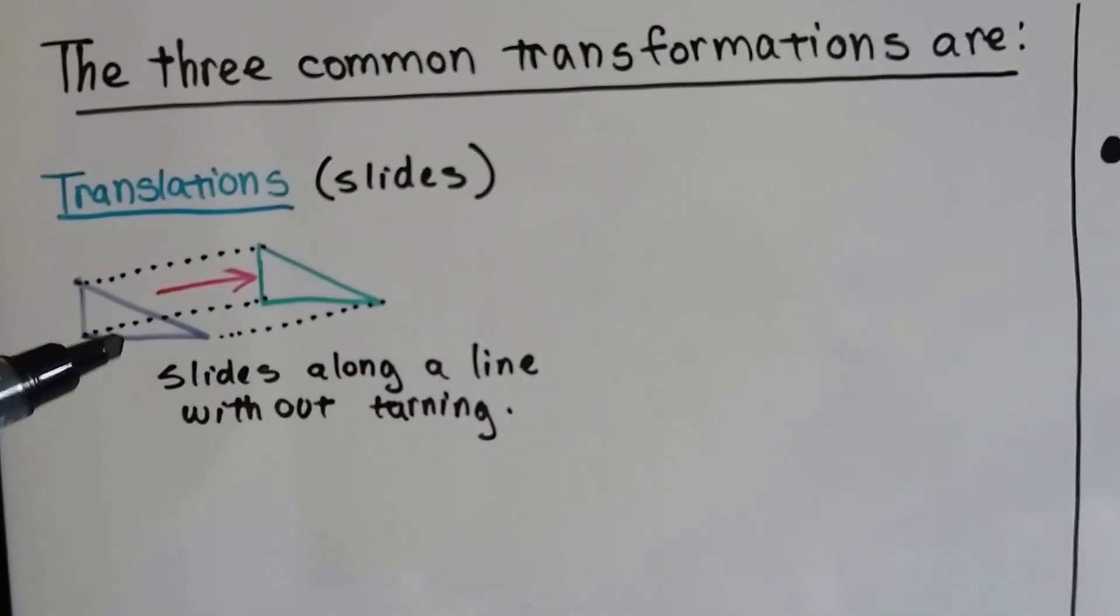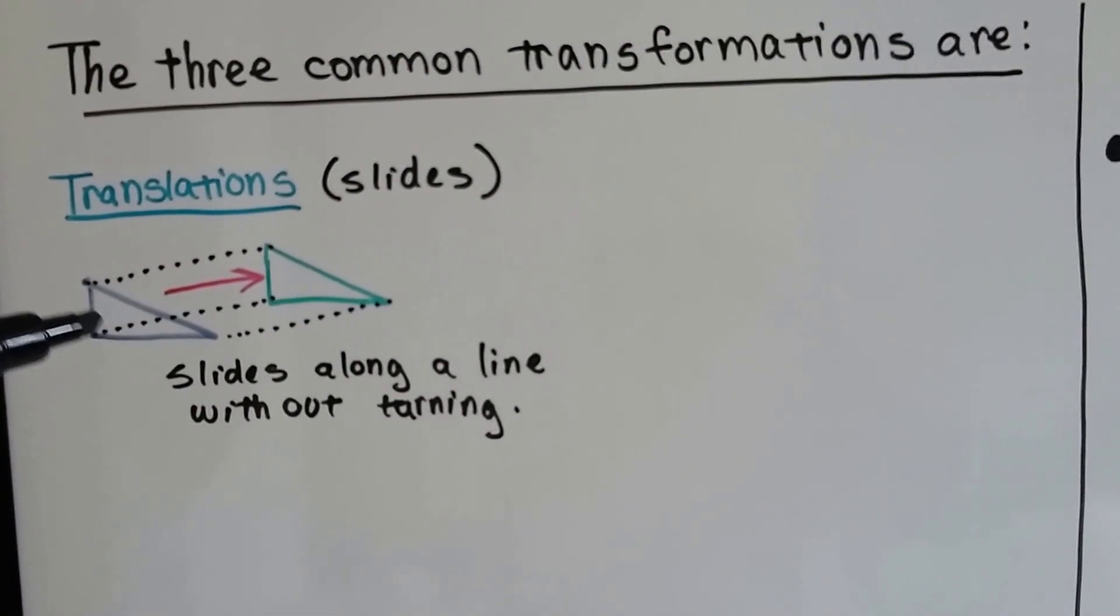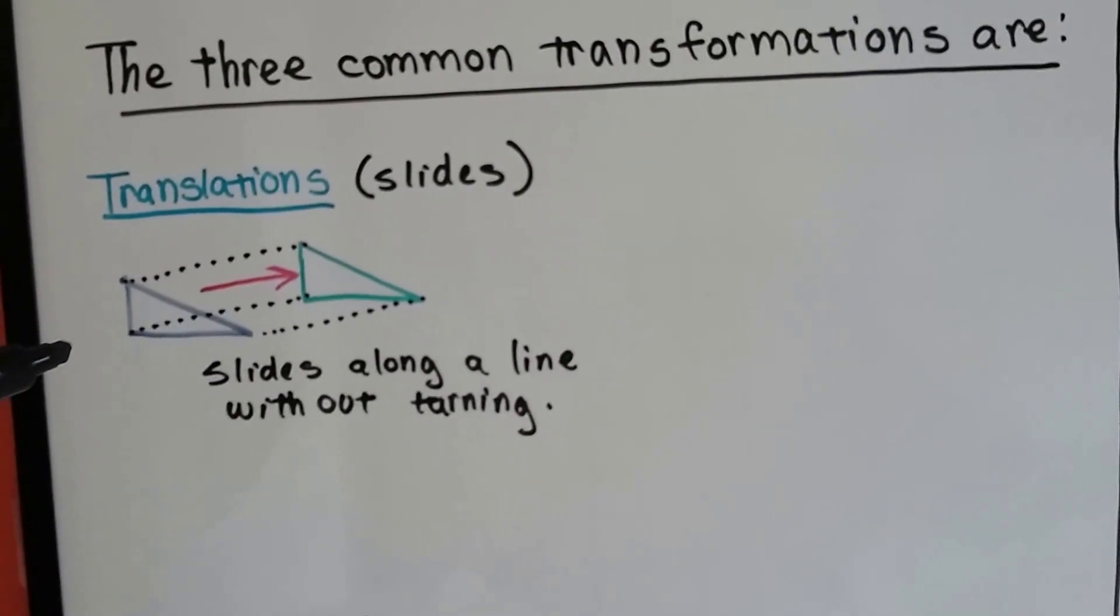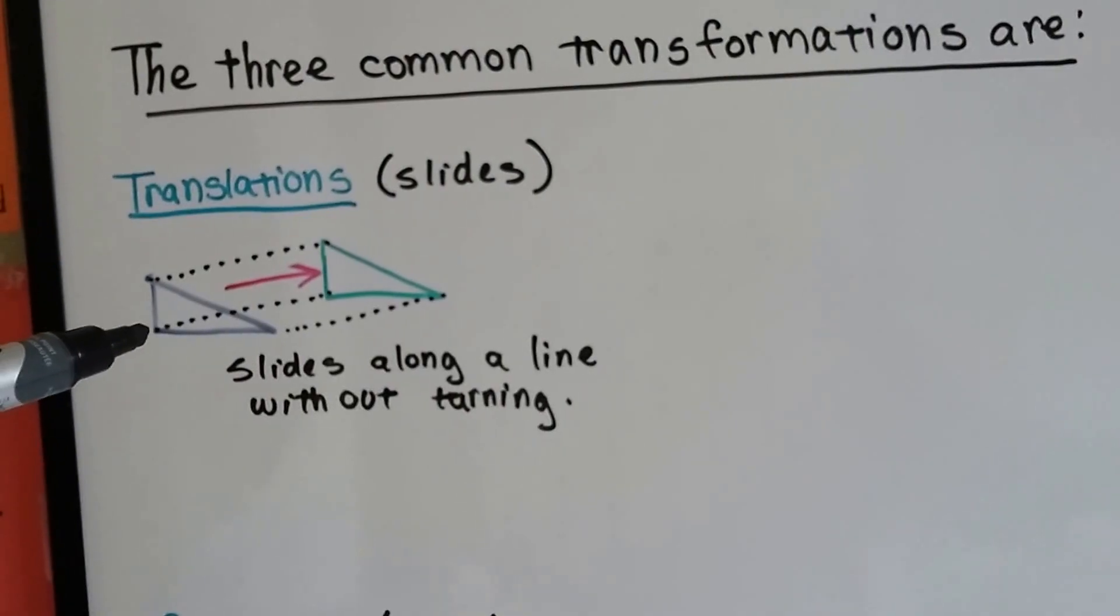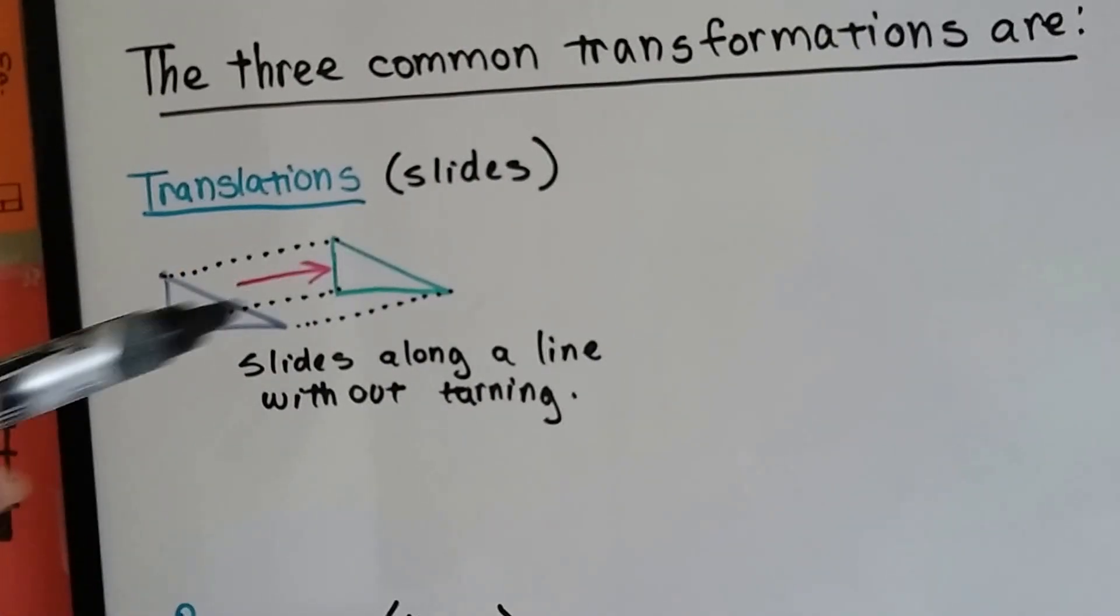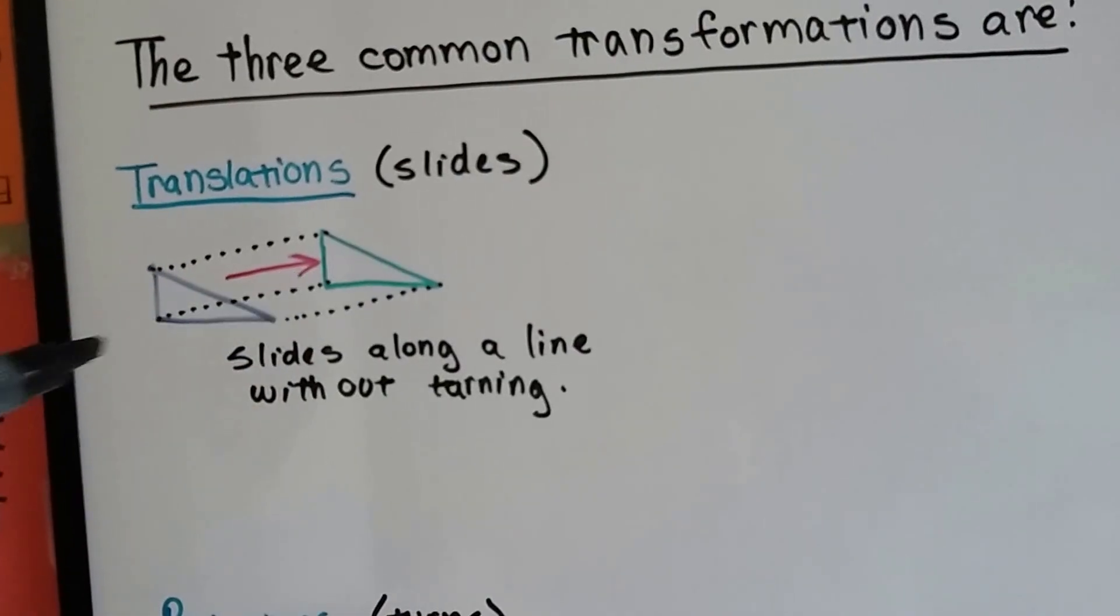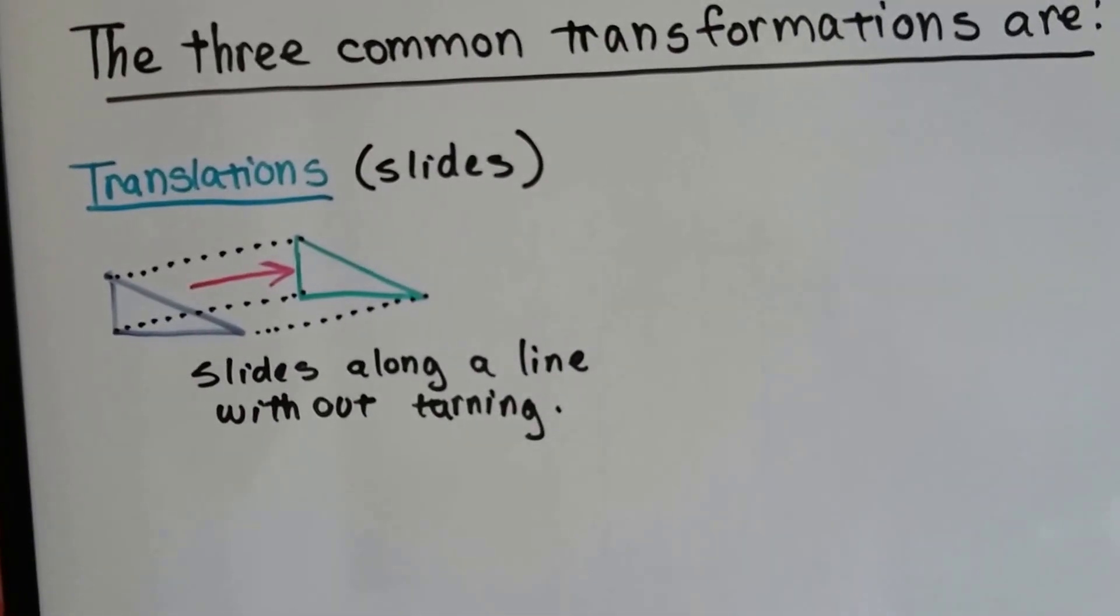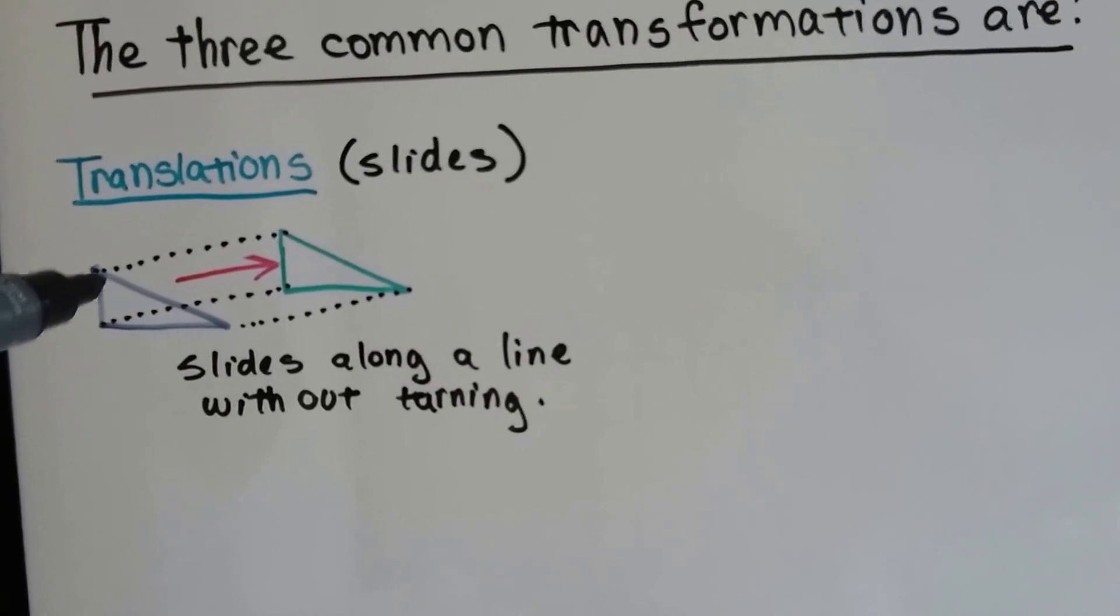In language, you would slide the English version to the Spanish version or the Spanish version to the English version, or German to English, or French to German. It's using the same words in a different language, so it's like sliding a shape. You slide the shape along a line without turning it.